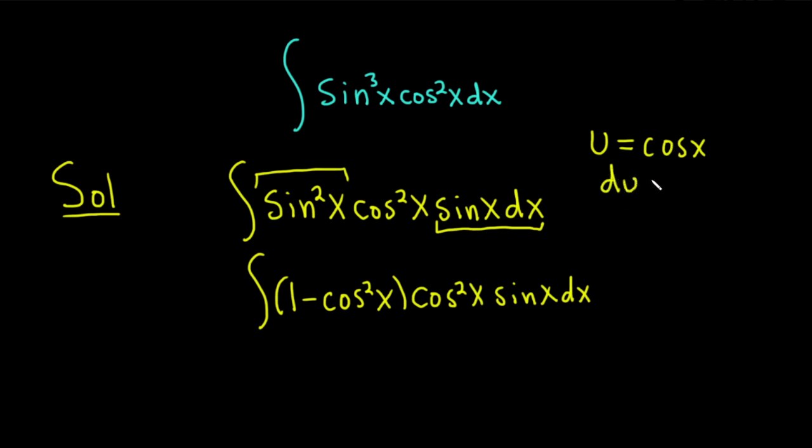Taking the derivative of u equals cosine x on both sides, we get du equals negative sine x dx. And we want this to look like what's in our integral, but there's no negative sine in our integral. So what we're going to do now is multiply or divide both sides of this equation by negative 1. It's going to give us negative du equals sine x dx.